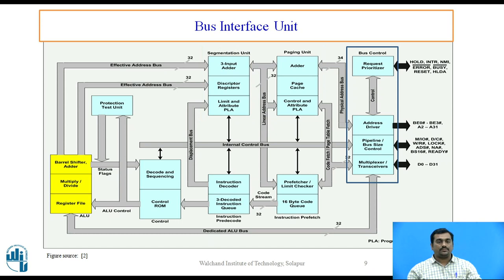Now let us see the bus interface unit. The bus interface unit has a priority resolver to resolve the priority of various bus requests and controls the access of the bus. The address driver drives the bus-enable signals BE0 bar to BE3 bar and address signals A2 to A31. The pipeline and dynamic bus sizing unit handles related control signals, and the data buffers interface the internal data bus with the system bus. The bus controller generates various control signals such as read bar, write bar, and ADS bar (address status signal). The cache control unit provides controls for the internal cache.